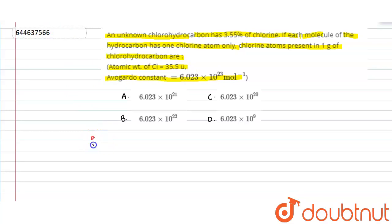Now, we have been given that the given quantities are 3.55% of chlorine in hydrocarbon, and one atom of chlorine per hydrocarbon. In one molecule there is one atom of chlorine.